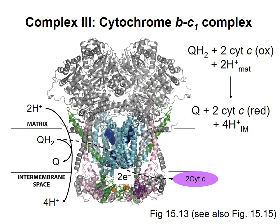Complex 3 is also called the cytochrome BC1 complex because two of its subunits are cytochrome B and cytochrome C1. The reaction it catalyzes is represented in this diagram. Two electrons from QH2 are transferred to cytochrome C, which you may remember is a peripheral membrane protein associated with the inner mitochondrial membrane.